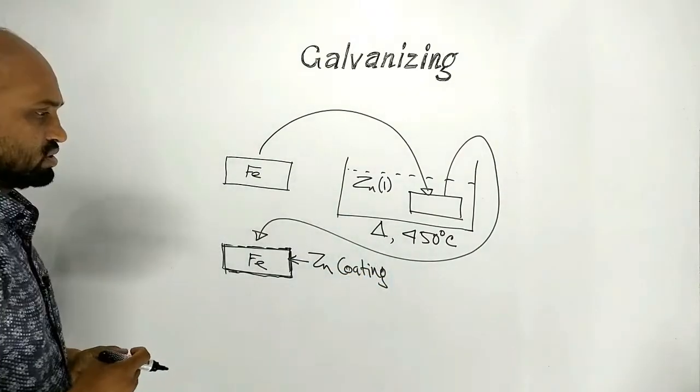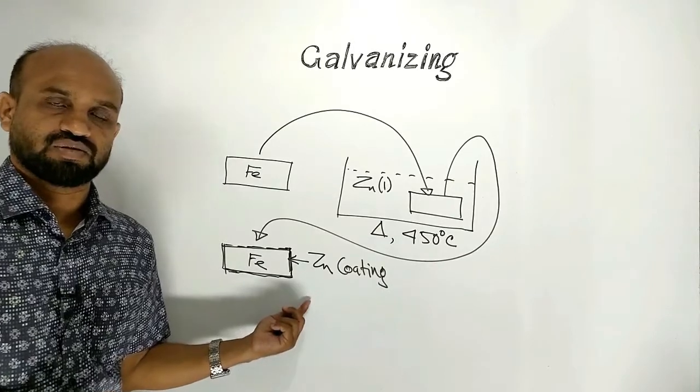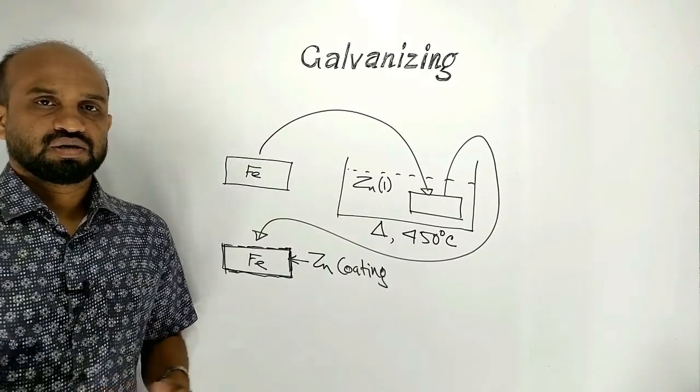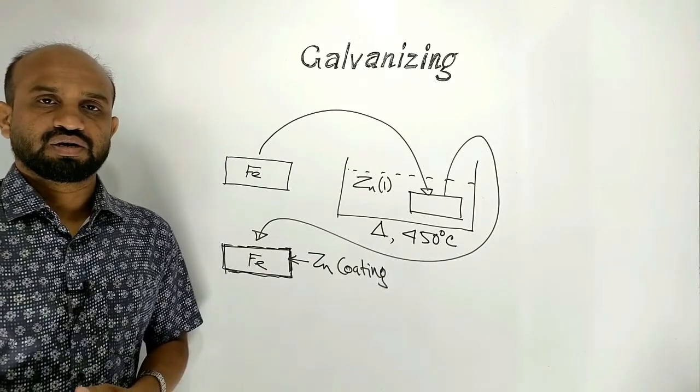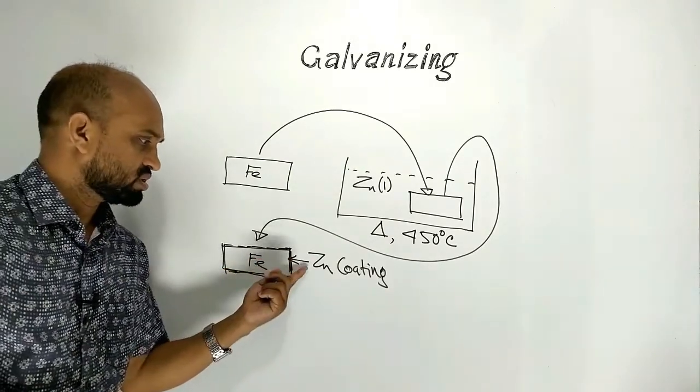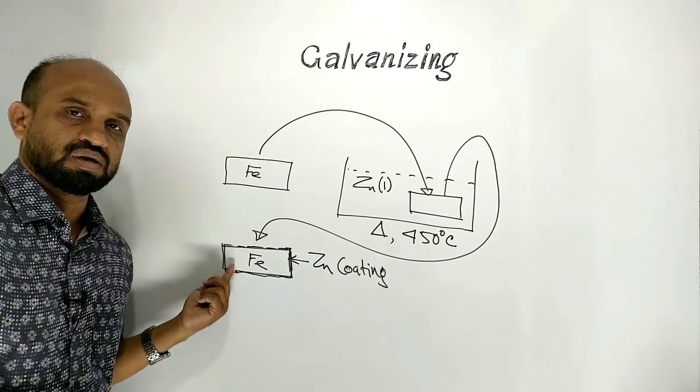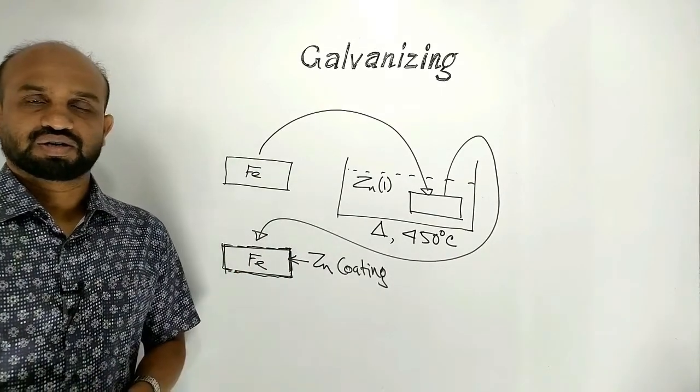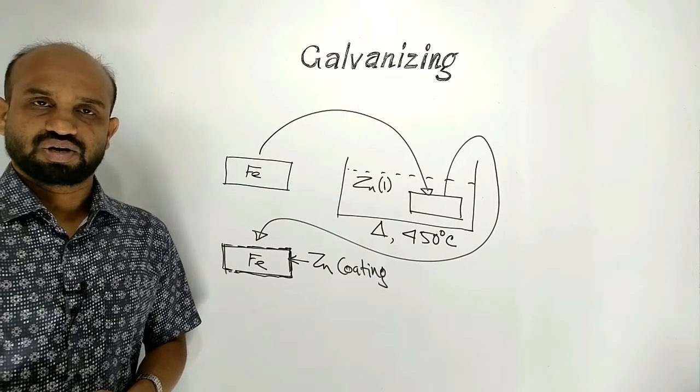This process is known as galvanizing. Definition is the process of making a layer of zinc on the article made up of iron. It's called galvanizing or galvanization.